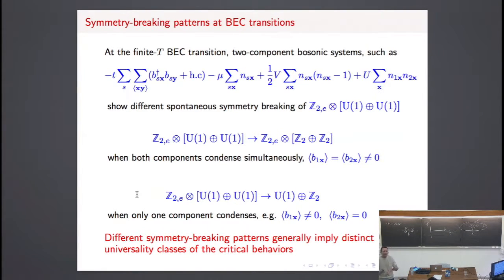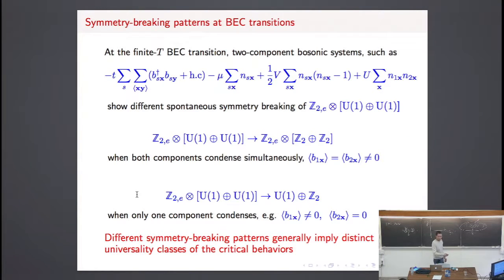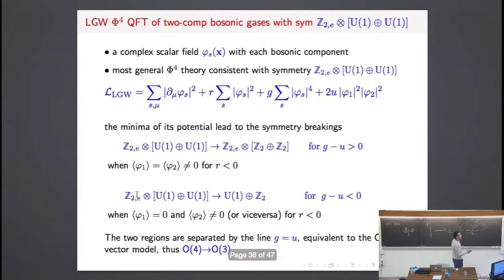Does this mean that the critical behavior associated with the two Bose-Einstein condensation patterns is different? One of the paradigms of renormalization group theory is that critical behavior is essentially determined by the symmetry breaking pattern. If we have different symmetry breaking patterns, we should expect different critical behavior. Let's check this using the same approach: we construct the corresponding Landau-Ginzburg-Wilson phi-to-the-fourth theory.